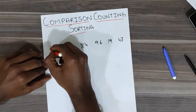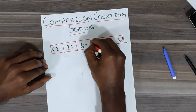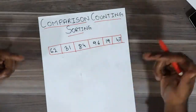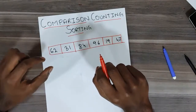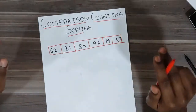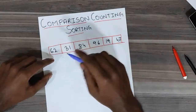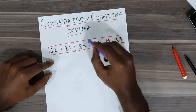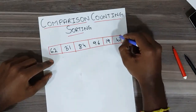Now consider this array. We need to sort it. What this algorithm says is we have to find out the number of elements which are smaller than the given element, and that number will tell us which position it lies in the sorted array. For 62, let's find out the number of elements which are smaller than it: 31 is smaller, 84 is not, 96 is not, 19 is smaller, and 47 is smaller.